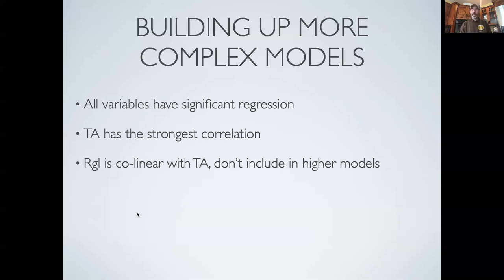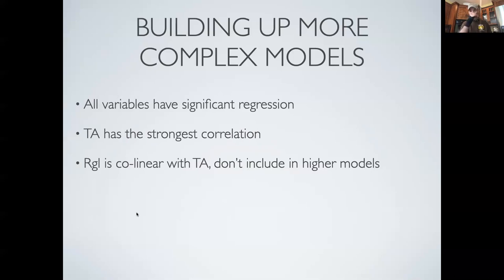Remember from looking at the collinearity that RGL, which is our long-wave thermal radiation, was very collinear with air temperature. So I'm going to decide not to include that in the higher models. I have two things that are very tightly related to each other, and air temperature was a better predictor of soil temperature than long-wave radiation. So I'm going to move forward with air temperature and drop long-wave thermal radiation. Maybe the reason long-wave was showing up in the first place was because it was also related to air temperature.